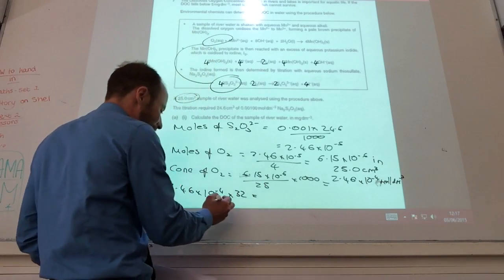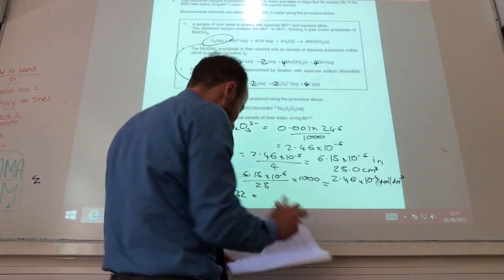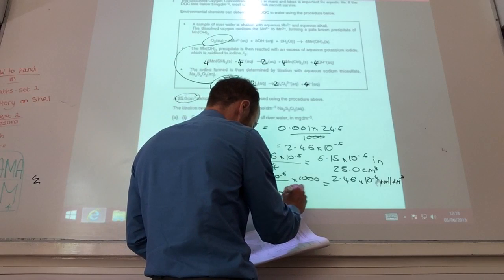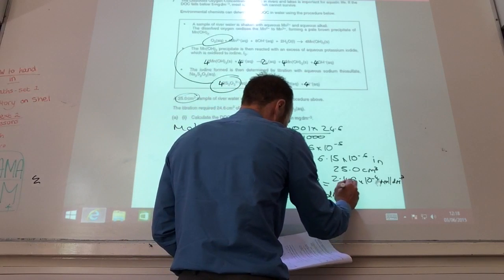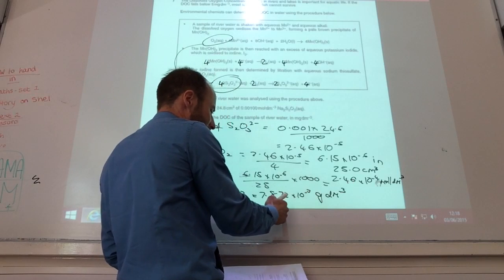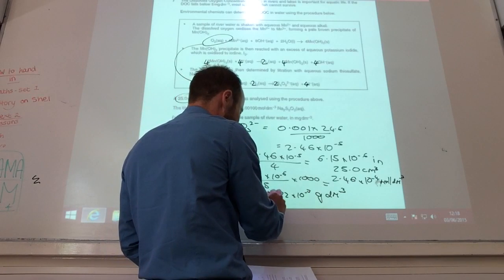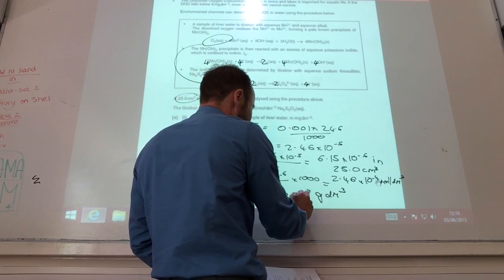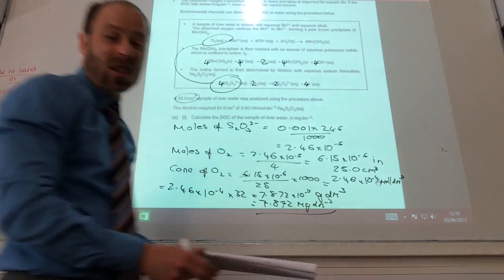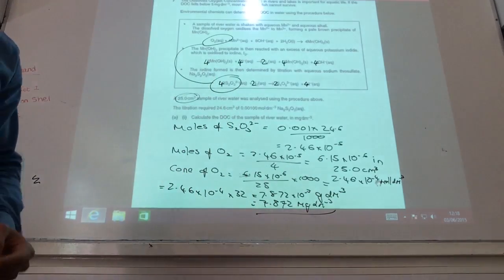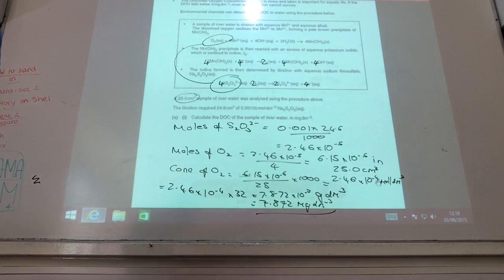And then, let's do that first of all. That gives me 7.872 times 10 to the minus 3 grams per decimeter cubed. They want it in milligrams, so I times by 1000, which is 7.872 milligrams per decimeter cubed. So the whole thing really is working out the unit bit at the end of it.